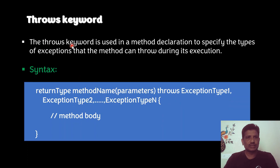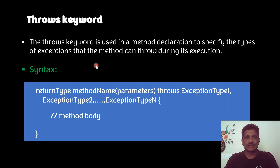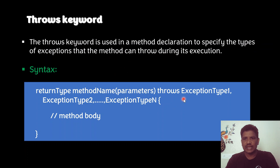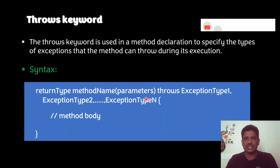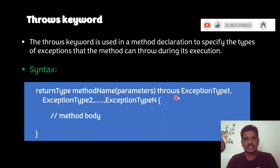Now let me talk about the throws keyword in Java. The throws keyword is used in a method declaration to specify the types of exceptions that the method can throw during its execution. The syntax is: returnType methodName(parameters) throws ExceptionType1, ExceptionType2, and so on. If the method can throw any types of exceptions, those exceptions must be declared with the help of the throws keyword.